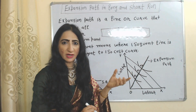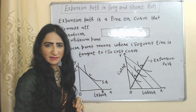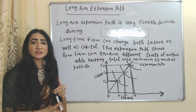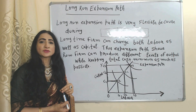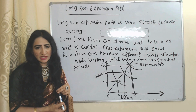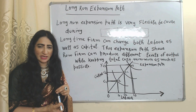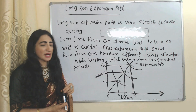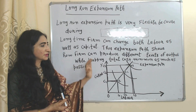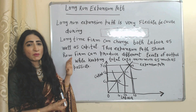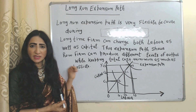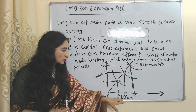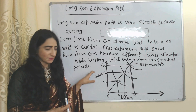A long-run expansion path is very flexible because during a long time period we can change both factors of production — labor as well as capital. The long-run expansion path mainly shows how a firm can produce different levels of output while keeping their cost as minimum as possible.